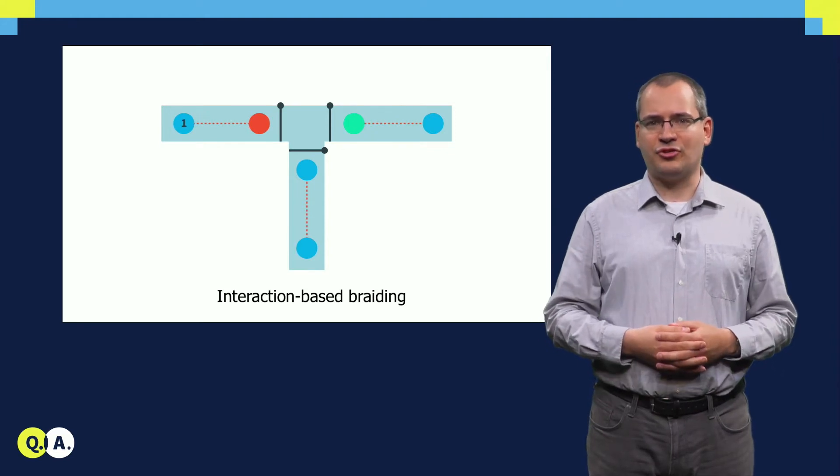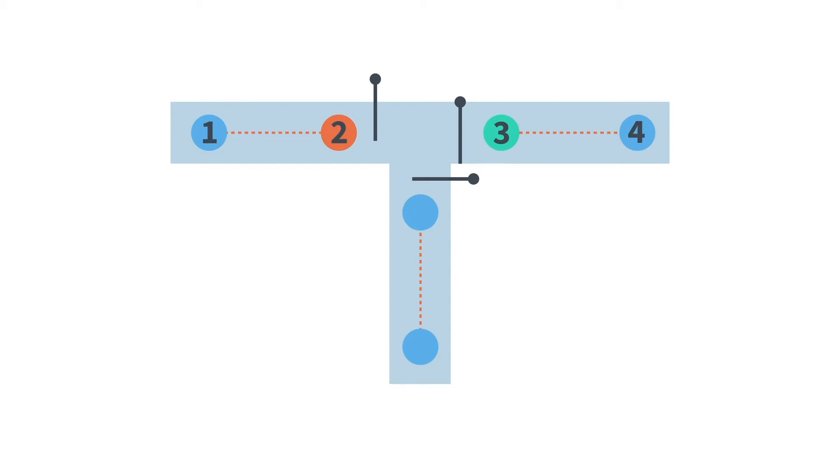The animation shows how to exchange or braid states 2 and 3. Importantly, each Majorana state is always located at the end of each segment. When opening a valve, we create a longer topological segment, which shuttles the quantum state of the Majorana to the very end of this longer segment.